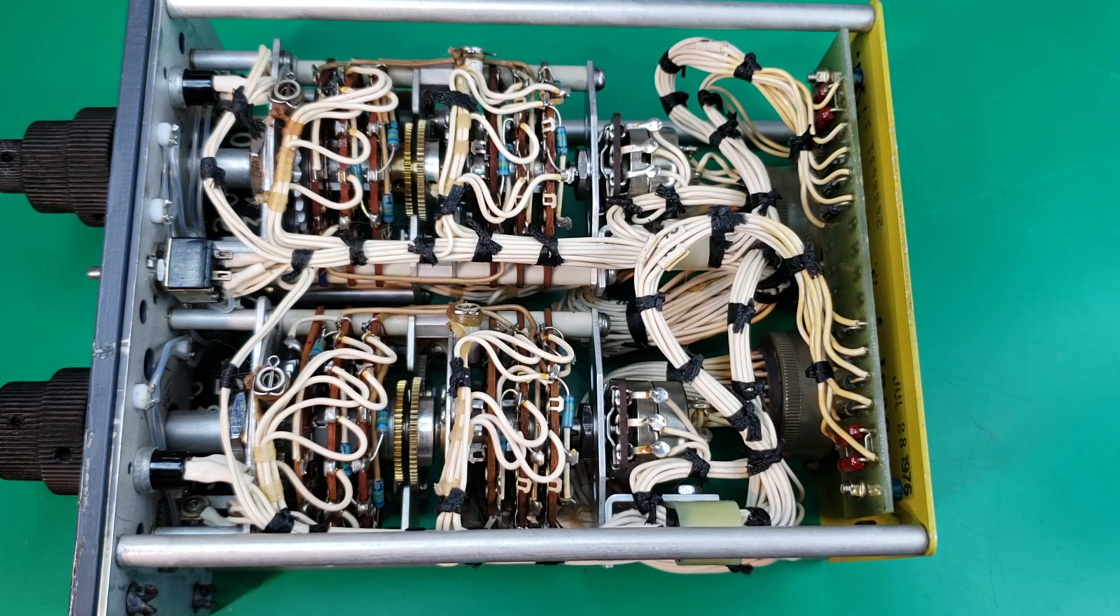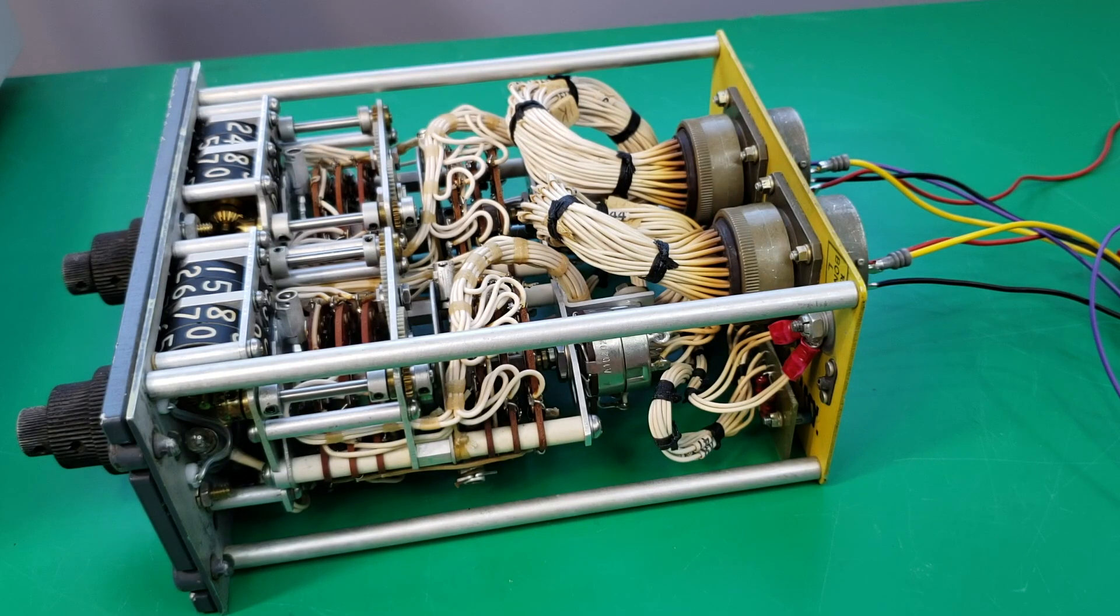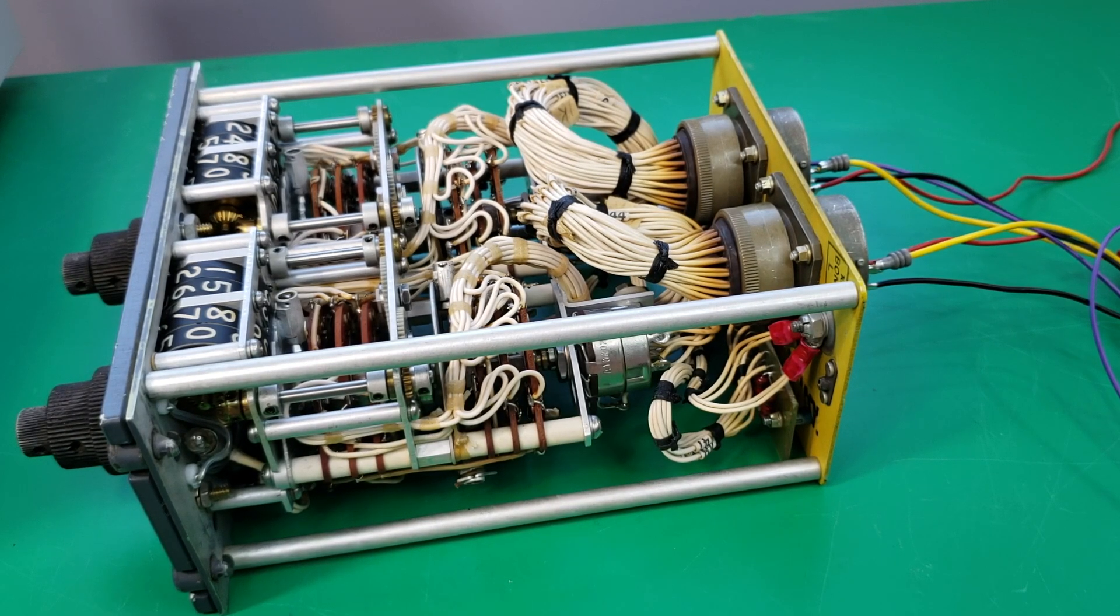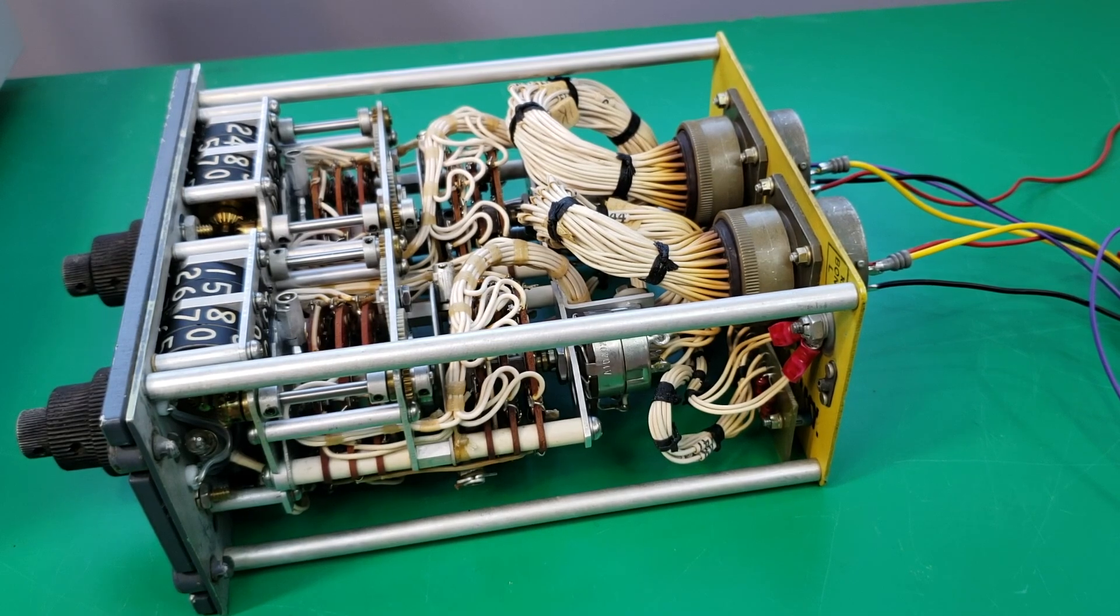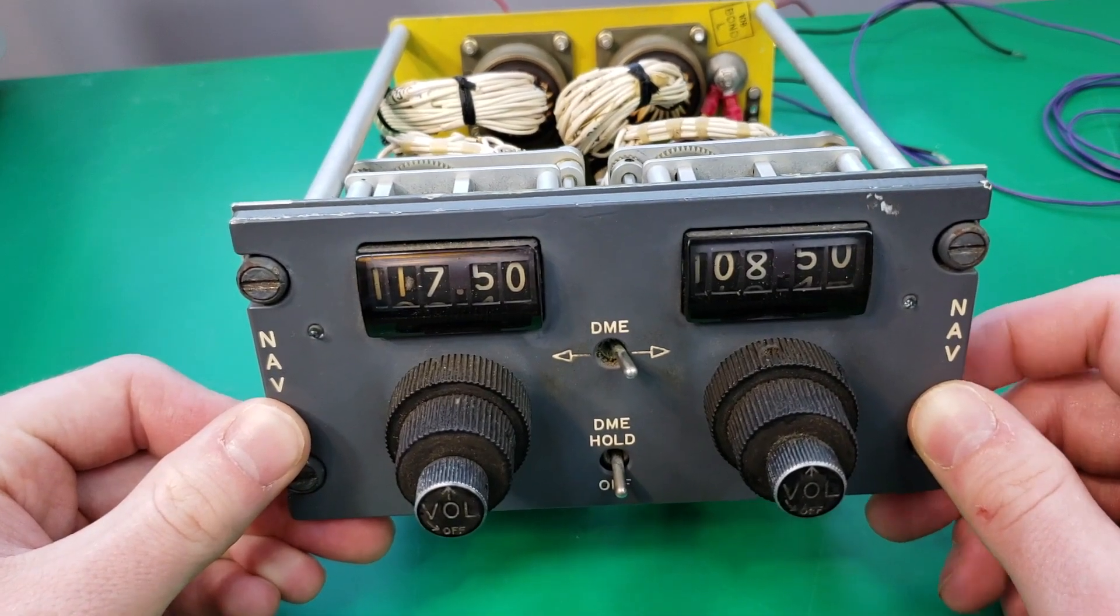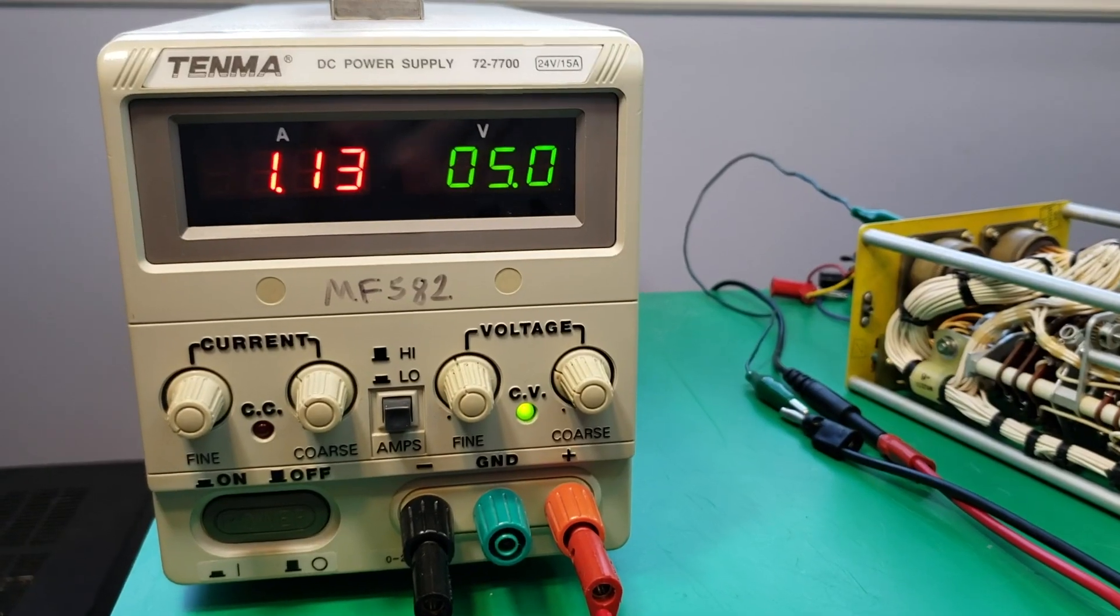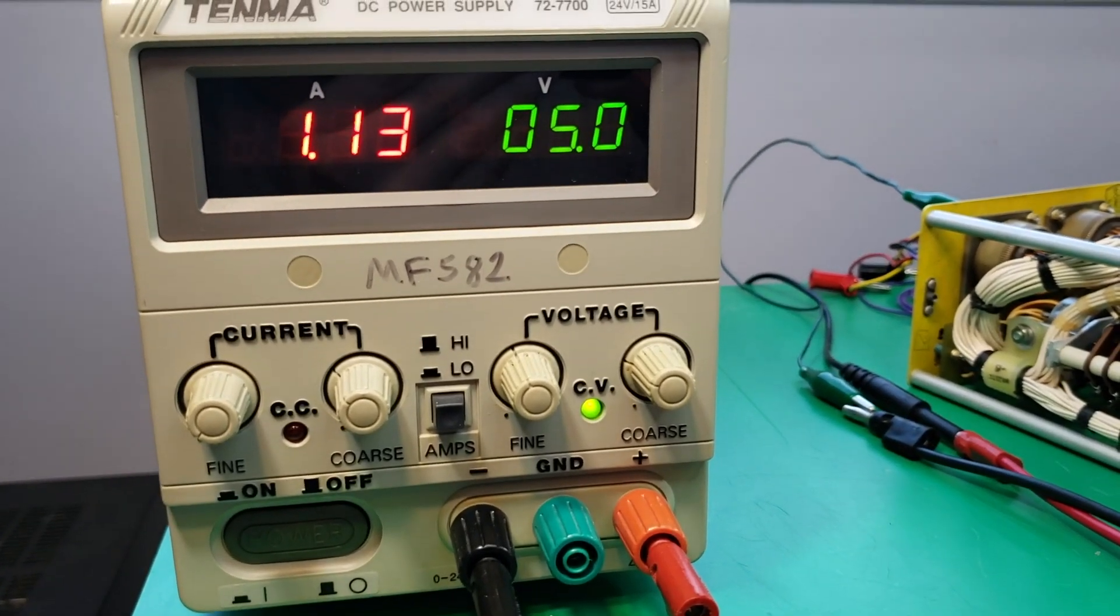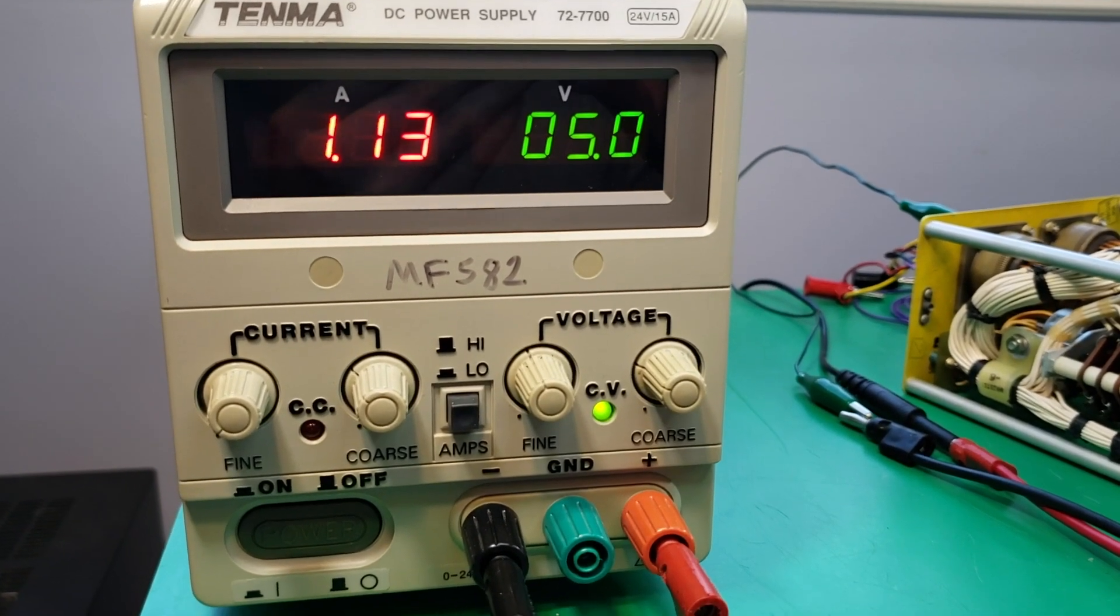Alright, let's get it hooked up to some power and see if we can get some of these lights to work. So after some tedious reverse engineering, I have figured out the pin outs for the backlight and indicator lights. First, I'm going to hook up the backlights which use about 5 volts. I've got my power supply set to 5 volts and you can see it's drawing about 1.1 amps of current.